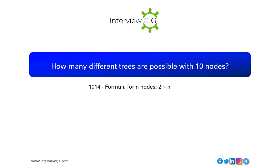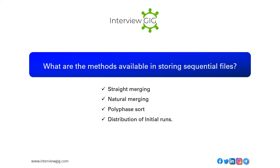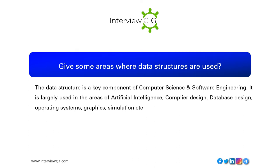How many different trees are possible with 10 nodes? Using the formula for n nodes: 2^n - n. What are the methods available for storing sequential files? Straight merging, natural merging, polyphase sort, and distribution of initial runs.